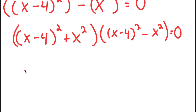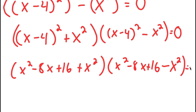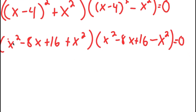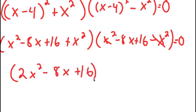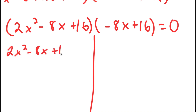I expand x minus 4 squared to get x squared minus 8x plus 16. So the expression becomes x squared minus 8x plus 16 plus x squared, times x squared minus 8x plus 16 minus x squared, equals 0. The x squared terms combine: x squared plus x squared gives 2x squared, and the subtraction cancels, leaving 2x squared minus 8x plus 16, times negative 8x plus 16, equals 0.